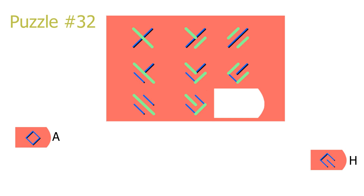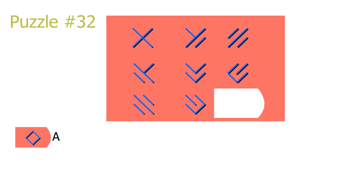To solve the puzzle, we know that the answer will have the same repetition as we can see in the third column. Out of the two answers left, only answer A has this repetition. Answer A is the correct solution.